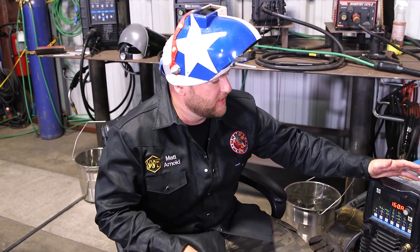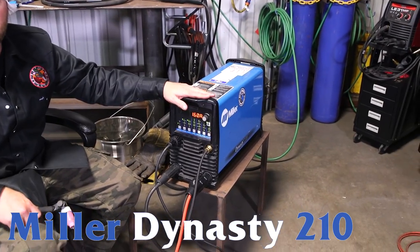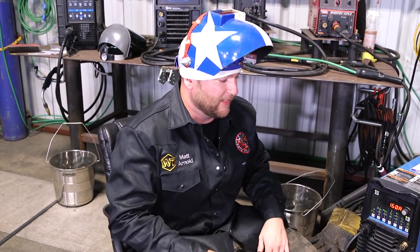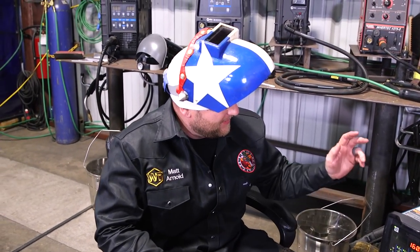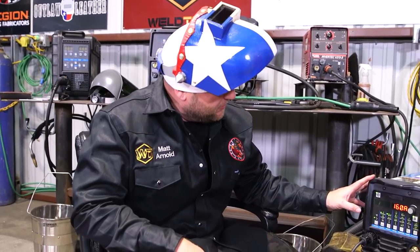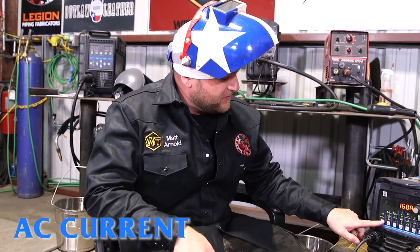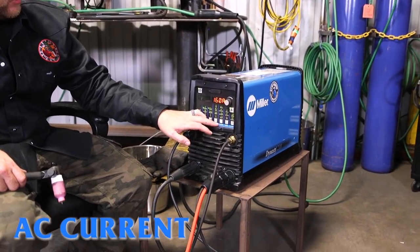All right guys, so for today's demonstration we're going to be running off my Miller Dynasty 210. Anytime I do alloys or especially aluminum, this is my go-to favorite machine, nothing like a Dynasty. So we're going to do aluminum, so alternating current is a must. No pulser.